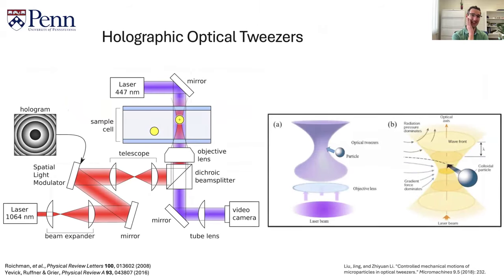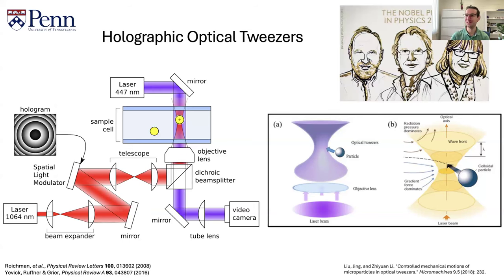One more exciting thing to mention is that with holography you can do a lot more — you can also build holographic optical tweezers. So you cannot just look at the cells, but you can actually manipulate them as well, holding them in place. The Nobel Prize in physics was given for this in 2018. I think this is a nice way to end the first part of the talk, and if there are any questions, that would be a good moment.